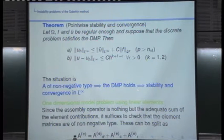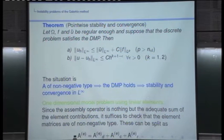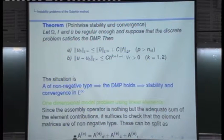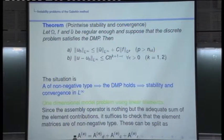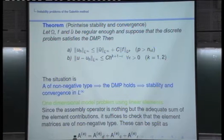The chain is: matrix of non-negative type implies discrete maximum principle (easy to prove), which implies stability and convergence in L-infinity (a deep result, not easy at all, except in one dimension). The design of methods with matrices of non-negative type was a very important topic 15–20 years ago, and is now again receiving attention, as many papers deal with obtaining stability and convergence in L-infinity.